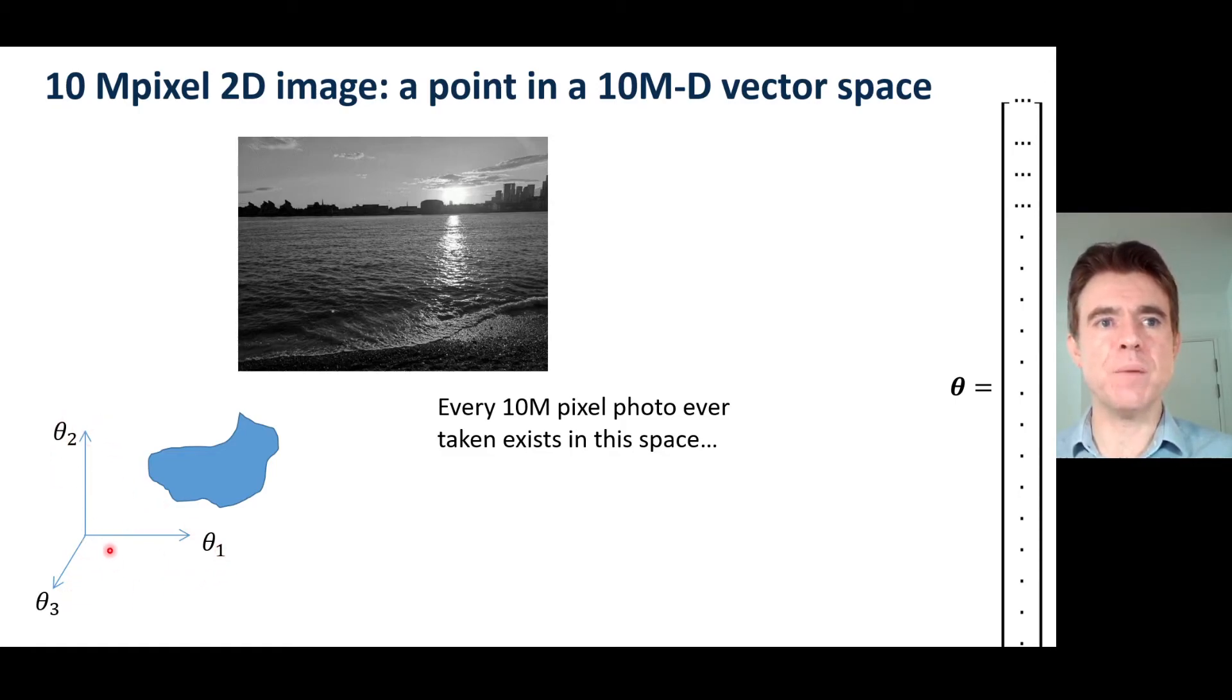And then we could consider every single photograph as just existing as a position in that high dimensional vector space. So I've pointed out here a subspace or a manifold just to say that this could represent, for example, every photo of a river ever taken.